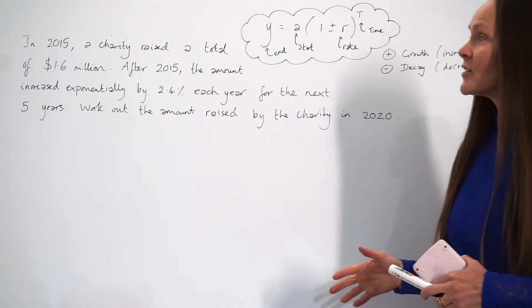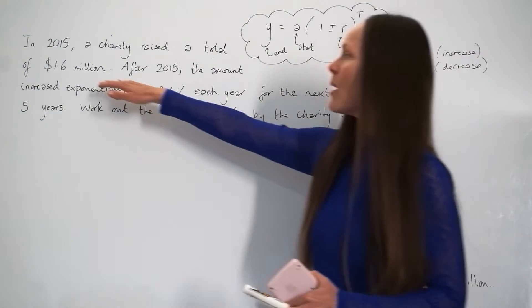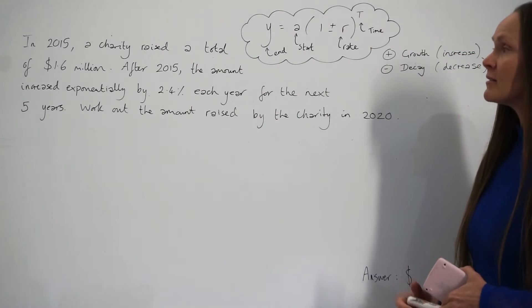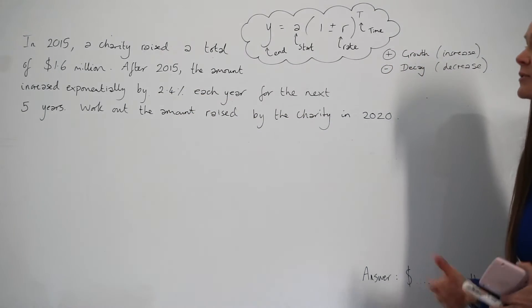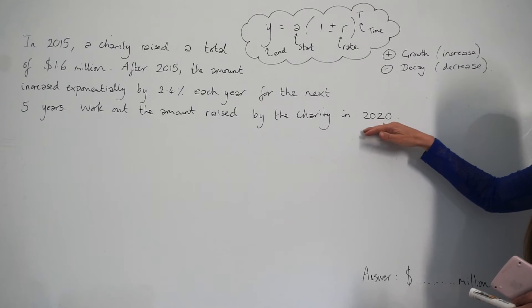In the next question, it says that in 2015, a charity raised a total of $1.6 million. After 2015, the amount increased exponentially by 2.4% each year for the next five years. Work out the amount raised by the charity in 2020.